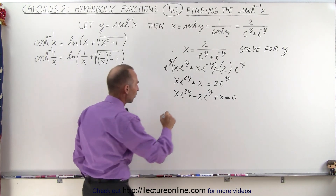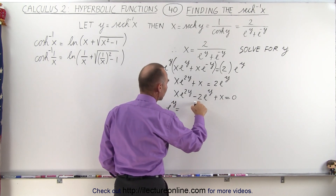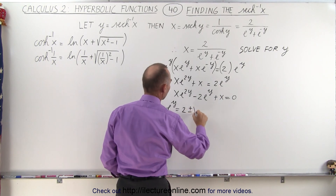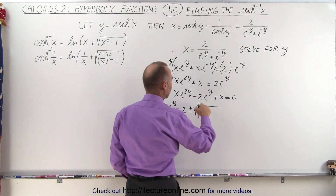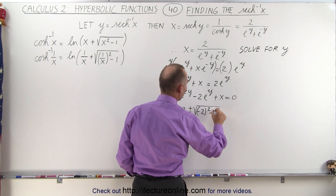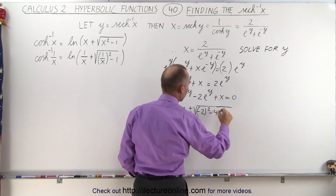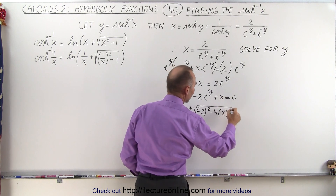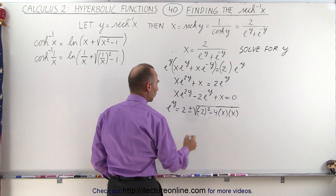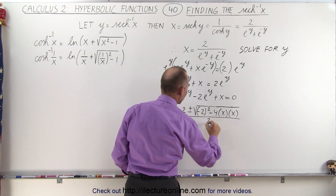We can solve for E to the Y using the quadratic formula: this is equal to the negative of the middle term, which is positive 2, plus or minus the square root of the middle term — negative 2 quantity squared — minus 4 times A, which is X, times C, which is X as well. Notice that all this will be divided by 2 times A, or 2 times X.